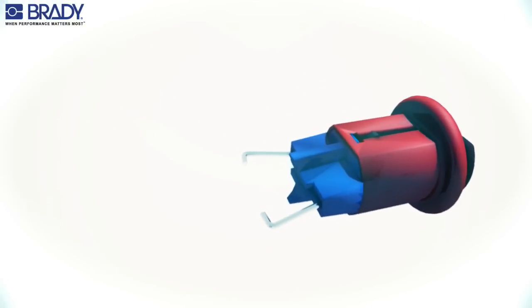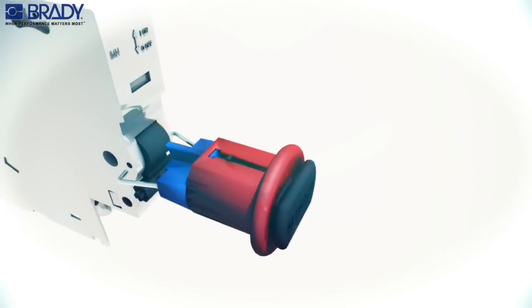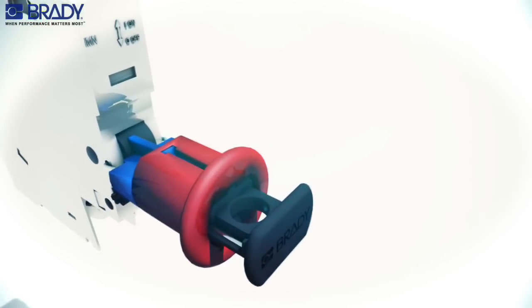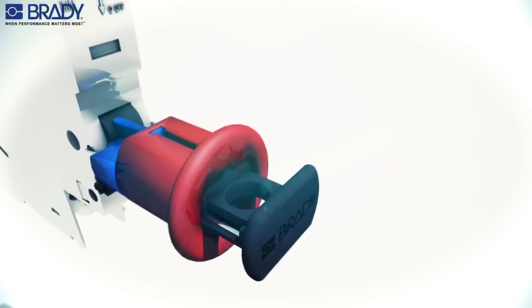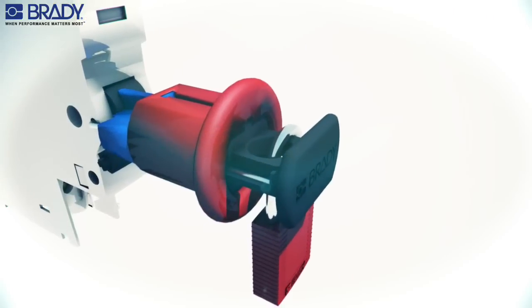Press the lockout device push button to disengage the pins. Position the pins into the small holes of the casing by releasing the push button. Attach a Brady safety padlock through the lockout device hole to complete the lockout.